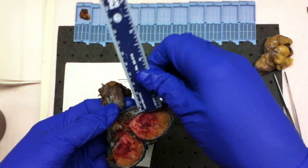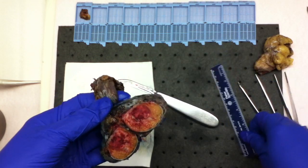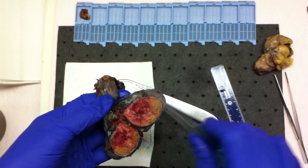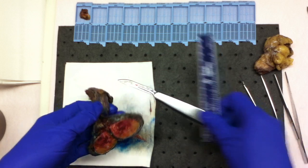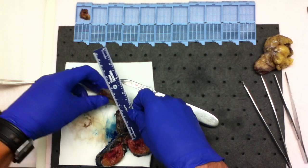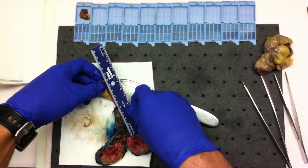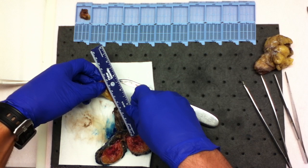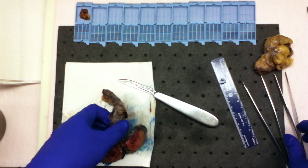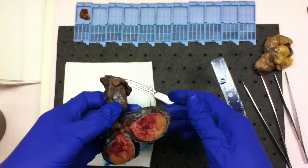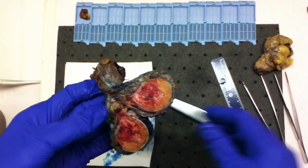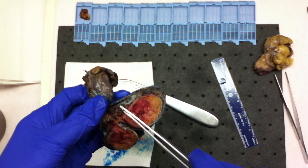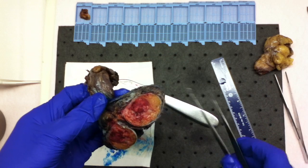The mass is 1.0 cm from the overlying tunica vaginalis or sectional margin. The mass is 14.8 cm from the spermatic cord resection margin. The mass does not grossly involve the overlying epididymis.